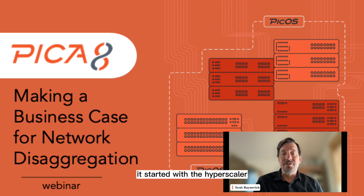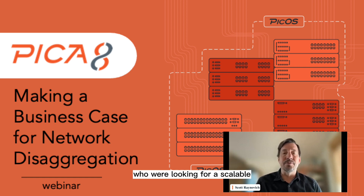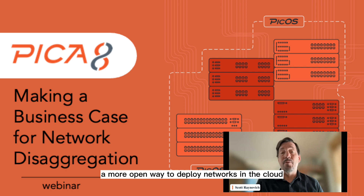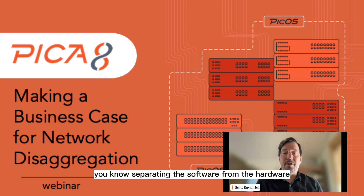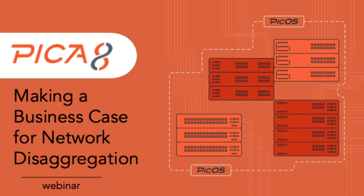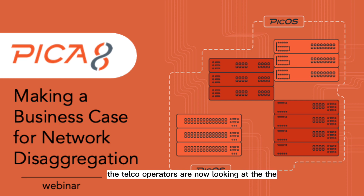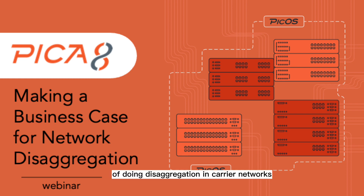As we've seen, it started with the hyperscalers — the hyperscale cloud providers who were looking for a scalable, more efficient and economic way, and specifically a more open way to deploy networks in the cloud by separating the software from the hardware. That's what disaggregation means. More recently, we've seen disaggregation move into other areas such as mobile networks with 5G, and telco operators are now looking at the benefits and economies of doing disaggregation in carrier networks.